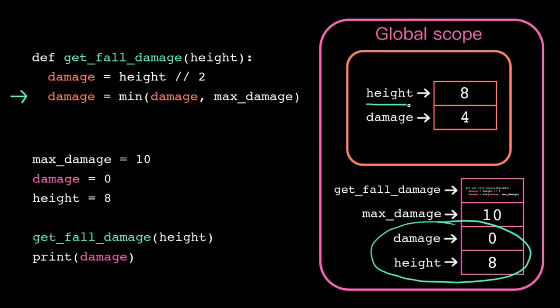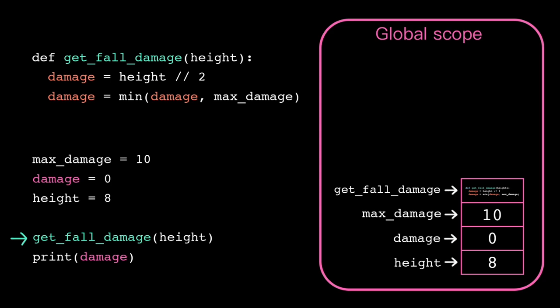Instead, we're creating new damage and height variables in a different scope. We call this local scope because it's local to this region of memory. As soon as the function call returns, that stack frame gets popped off, so all those local variables disappear.